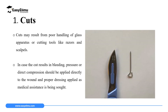The first accident or injury in the laboratory is cuts. Cuts might result from poor handling of glass apparatus or poor handling of cutting tools like razors and scalpels. In case of a cut leading to bleeding, the student must apply pressure and compress the area where the cut is, to ensure blood which might be contaminated with chemicals moves out. The student should then do proper dressing and seek medical attention.